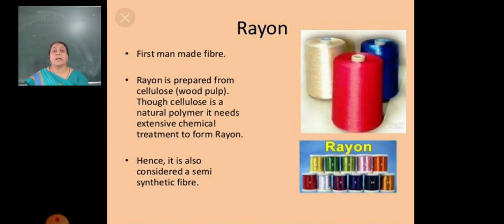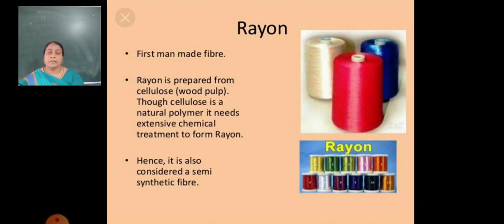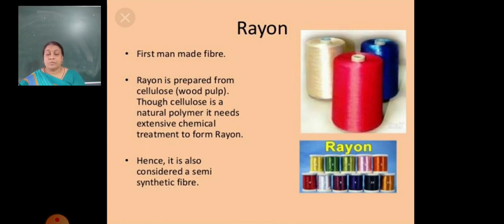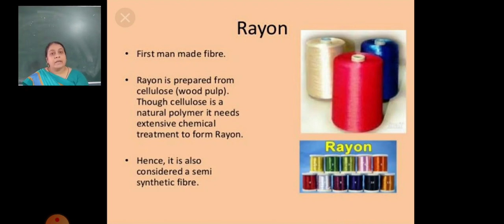Now first, let's look at rayon. Rayon is the first man-made fiber. It is prepared from cellulose, that is wood pulp. Cellulose is a natural polymer, but it needs extensive chemical treatment to form rayon. We use chemicals like sodium hydroxide and carbon disulfide. Hence, it is also considered a semi-synthetic fiber.